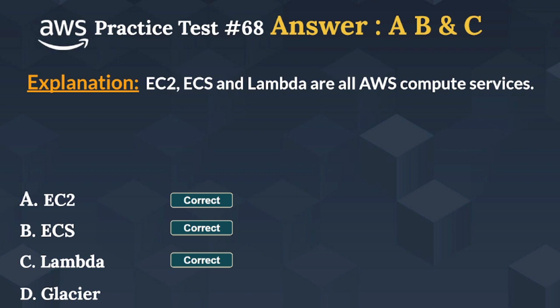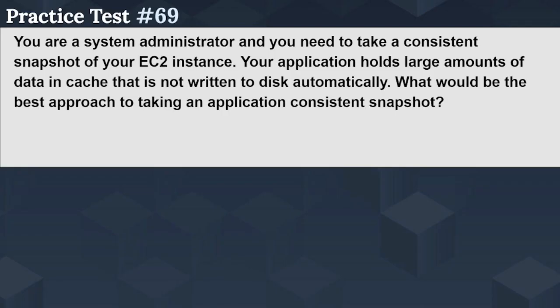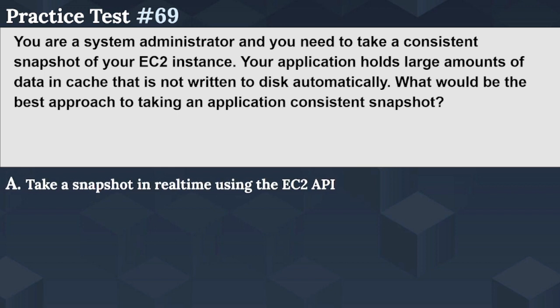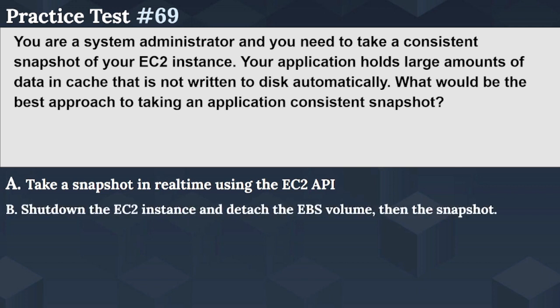Let's move to the next question. You are a system administrator and you need to take a consistent snapshot of your EC2 instance. Your application holds large amounts of data in cache that is not written to disk automatically. What would be the best approach to taking an application-consistent snapshot? Option A: take a snapshot in real-time using the EC2 API. Option B: shut down the EC2 instance and detach the EBS volume, then take the snapshot.